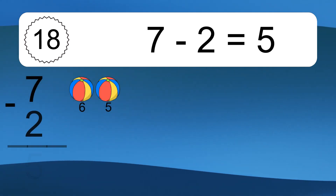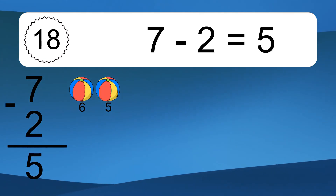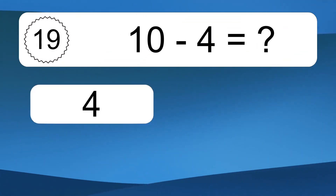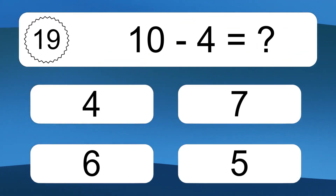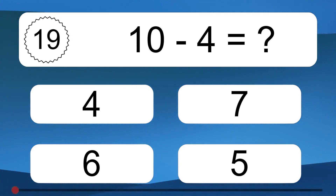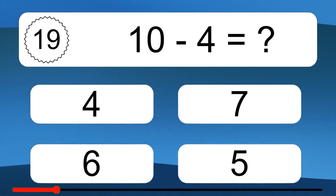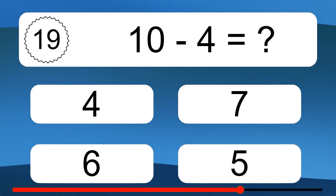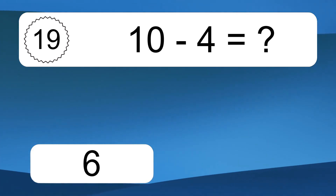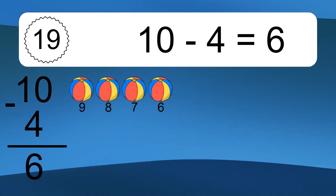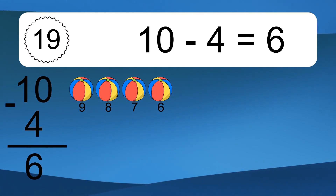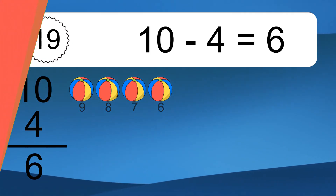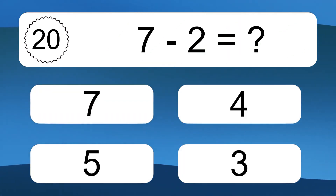7 minus 2 equals what? 7 minus 2 equals 5. Let's count it: 6, 5. 10 minus 4 equals what? 10 minus 4 equals 6. Let's count it: 9, 8, 7, 6.